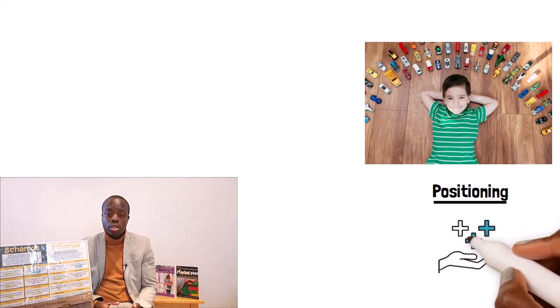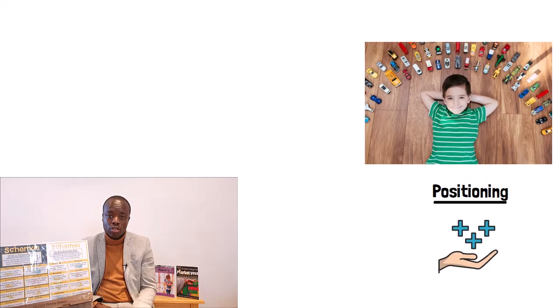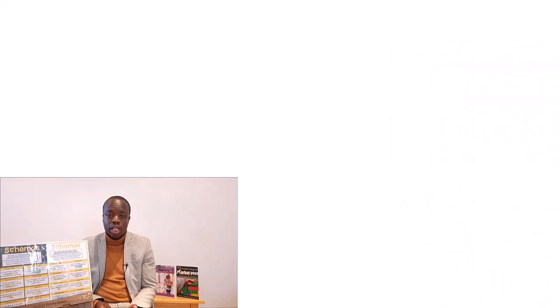So have resources that are similar to each other, like a selection of cars or a selection of trains. Different colour blocks will also aid this. The sixth key schema alphabetically is trajectory.